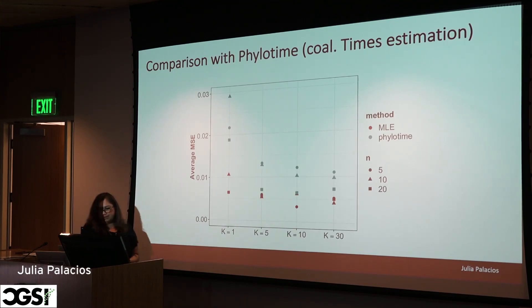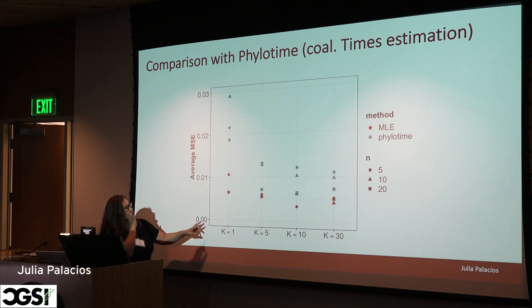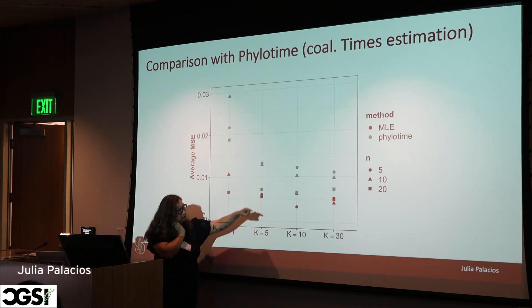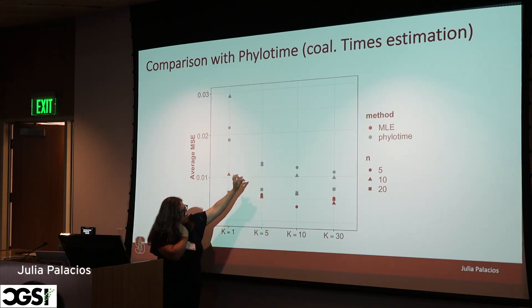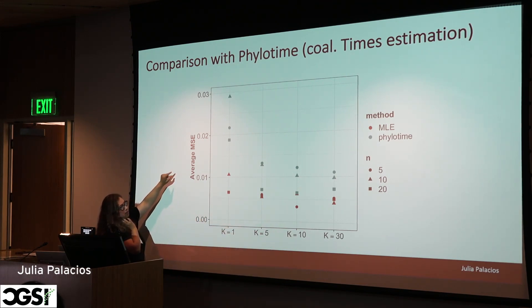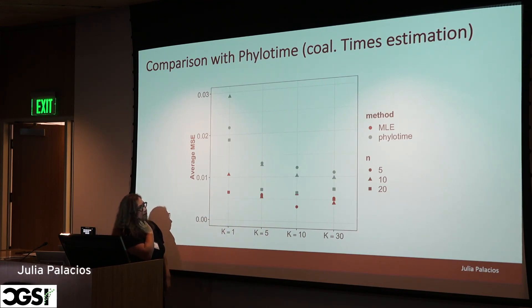There is another method called Filottime that is very similar to ours. Comparing our maximum likelihood estimation with Filottime across different numbers of integration barcodes and sample sizes — plotting mean squared error — they perform very similarly, with ours slightly better.